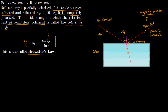Why does this happen? The electric field of the wave can be split into two parts: one parallel and the other perpendicular. The parallel part reflects more than the perpendicular part. So when these two are exactly 90 degrees to each other, the reflected part becomes completely polarized. We represent this with dots, showing that the reflected part is completely polarized, while the incident and refracted rays are still unpolarized. Only the reflected part is polarized because the angle between the reflected ray and the refracted ray is 90 degrees.